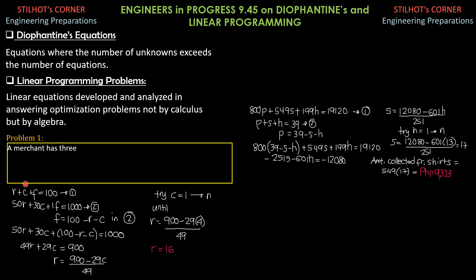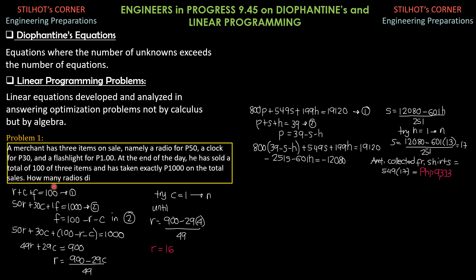Let's have this problem. Problem 1, a merchant has three items on sale. Namely a radio for 50 pesos, a clock for 30 pesos and a flashlight for 1 peso. So, at the end of the day, he has sold a total of 100 items and has taken exactly 1,000 pesos on the total sales. How many radios did he sell?